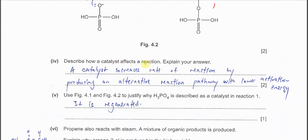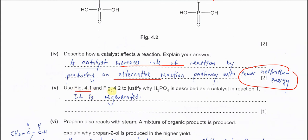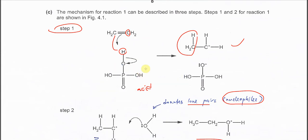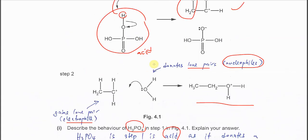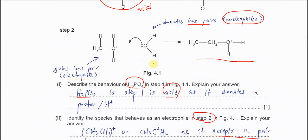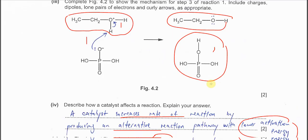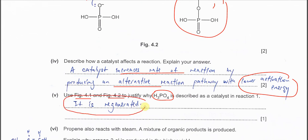Part four: describe how the catalyst affects the reaction. A catalyst increases the rate of reaction by providing an alternative reaction pathway with lower activation energy (EA). To justify why phosphoric acid is a catalyst: in step 1 it is consumed, but in step 3 it is regenerated. When a species is regenerated at the end of the reaction, we call it a catalyst.